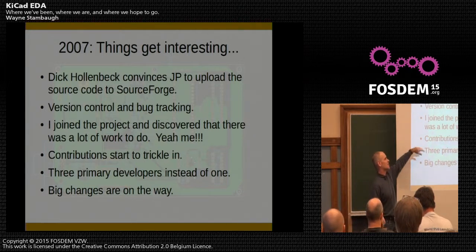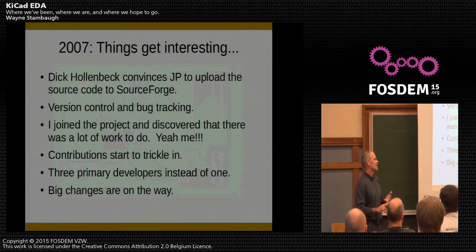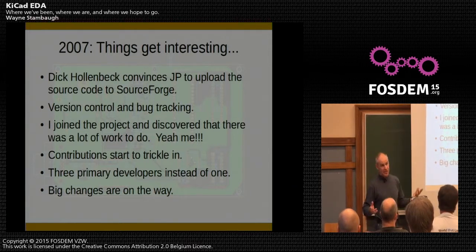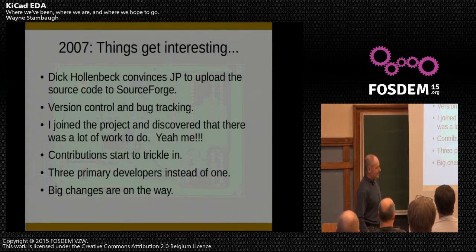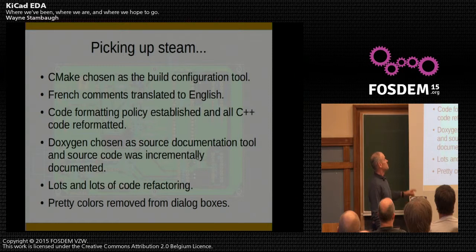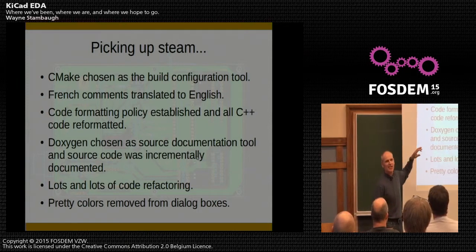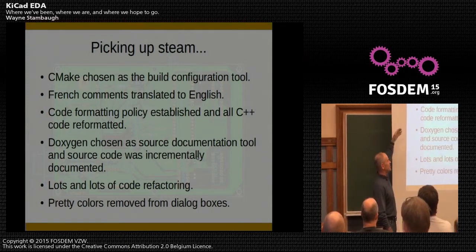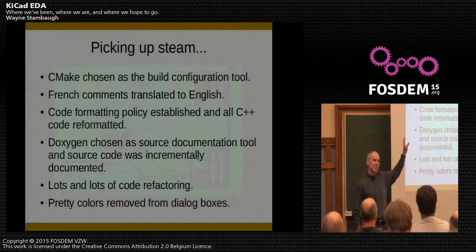We started getting some minor contributions, but now there were three primary developers: myself, Dick, and JP. All three of us had full-time jobs and this was very much part-time. Things were starting to move. There was a series of hand-rolled make files so building was always tricky — no dependency checking — so we adopted CMake as a build configuration tool. Because JP's English wasn't great, a lot of the comments in the source code, and even some of the code itself, was in French.